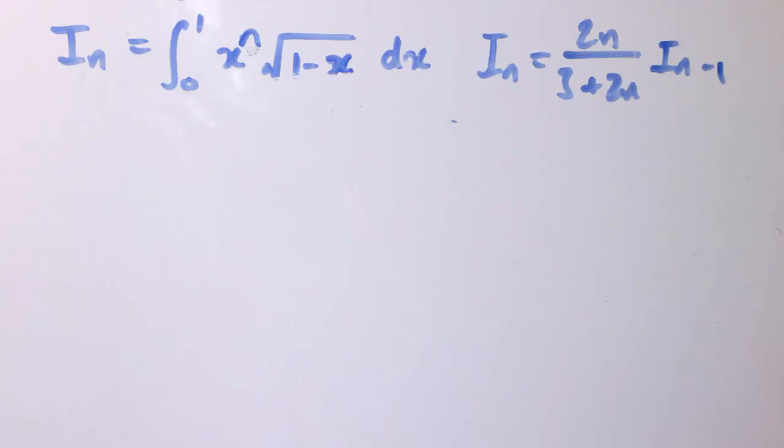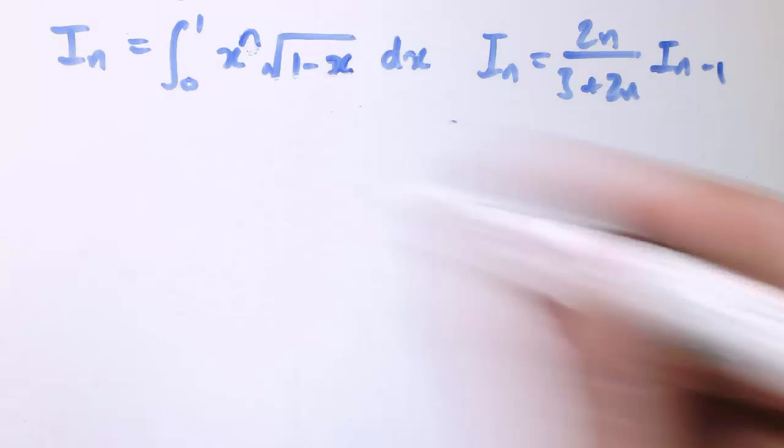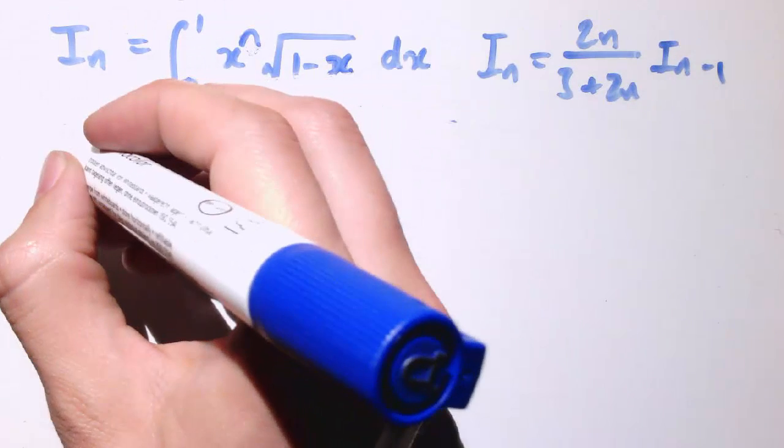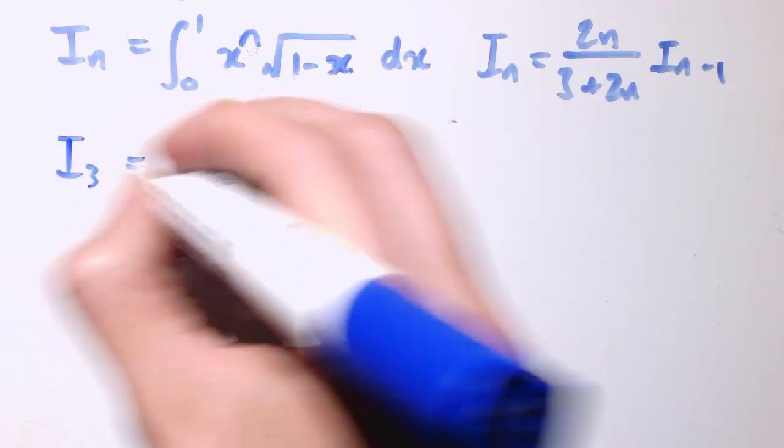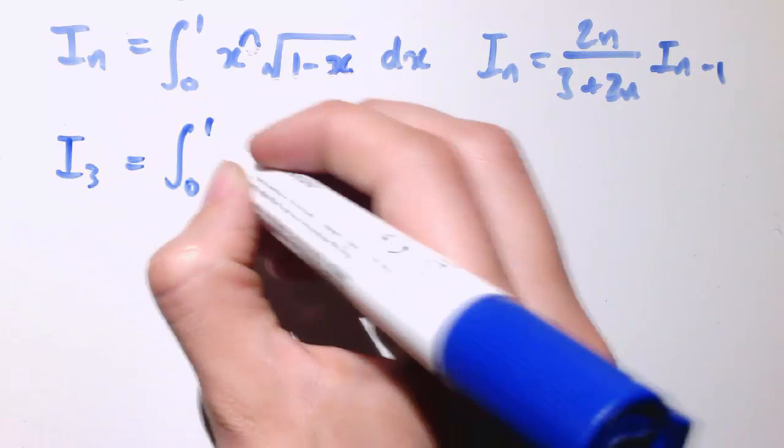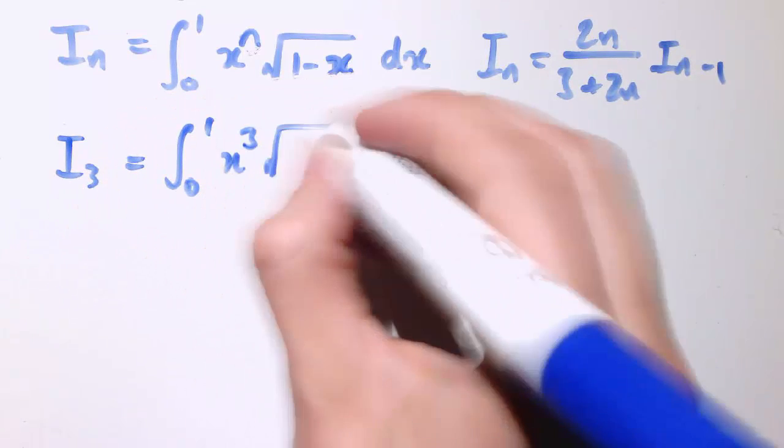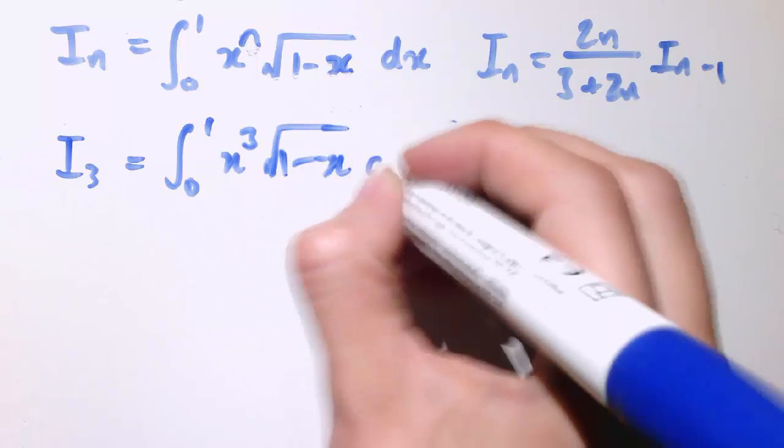So let's say I wanted to work out, for example, the value of i3, which is the integral between 0 and 1 of x cubed times root 1 minus x dx.